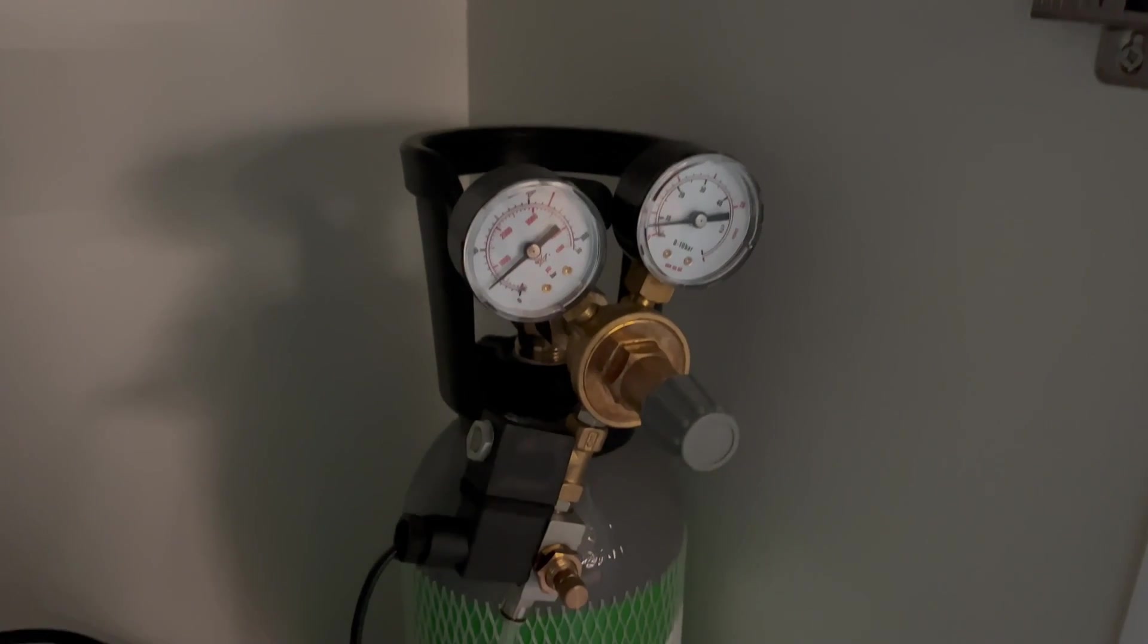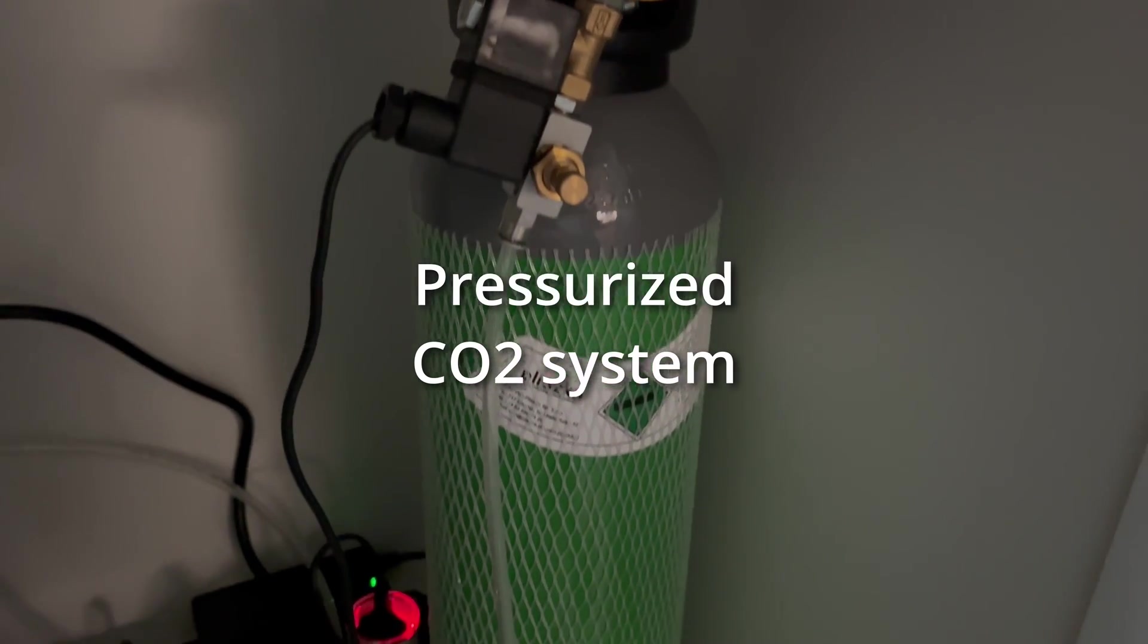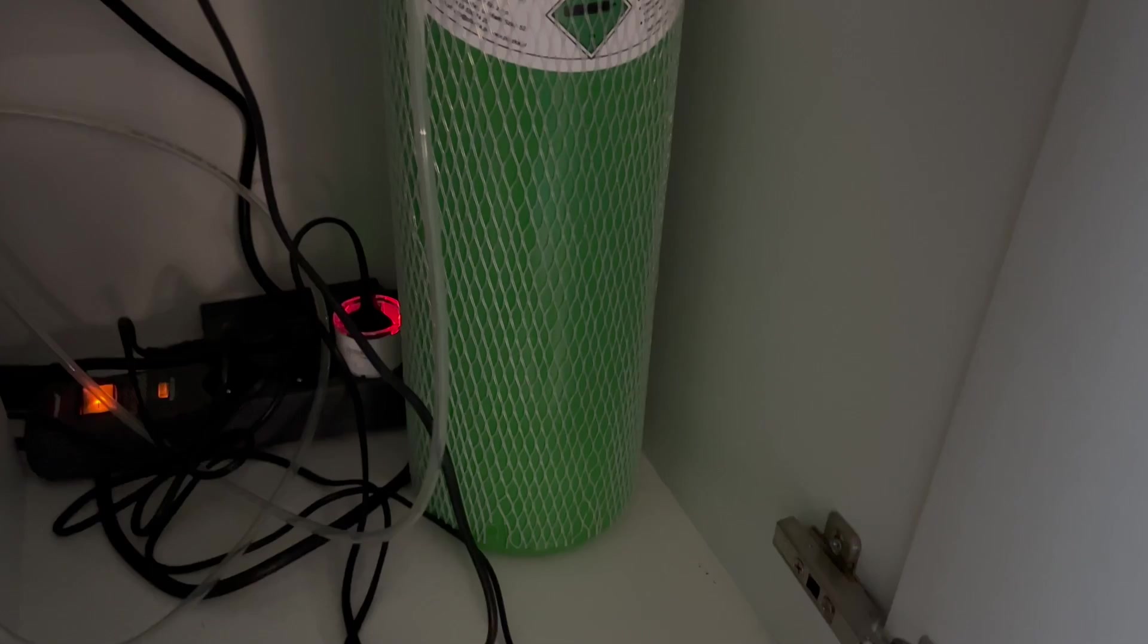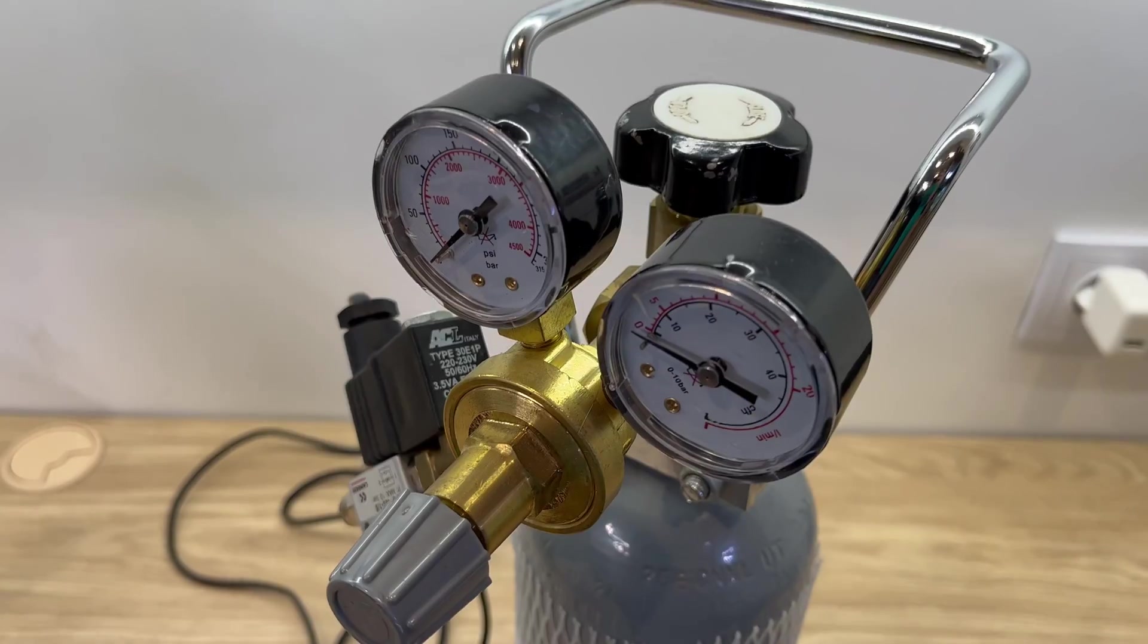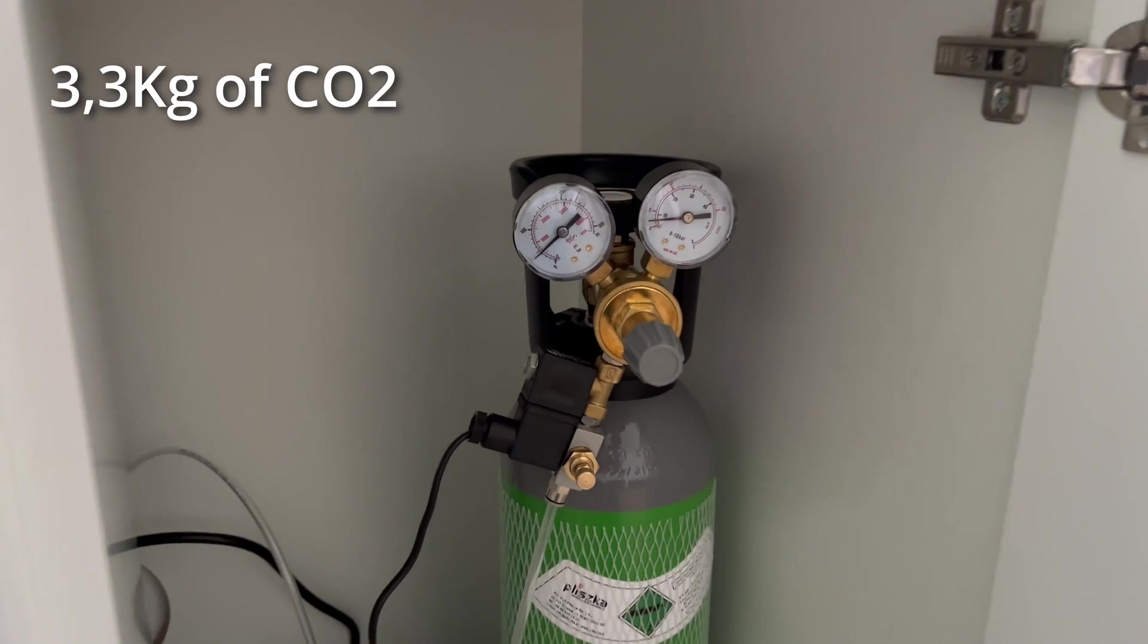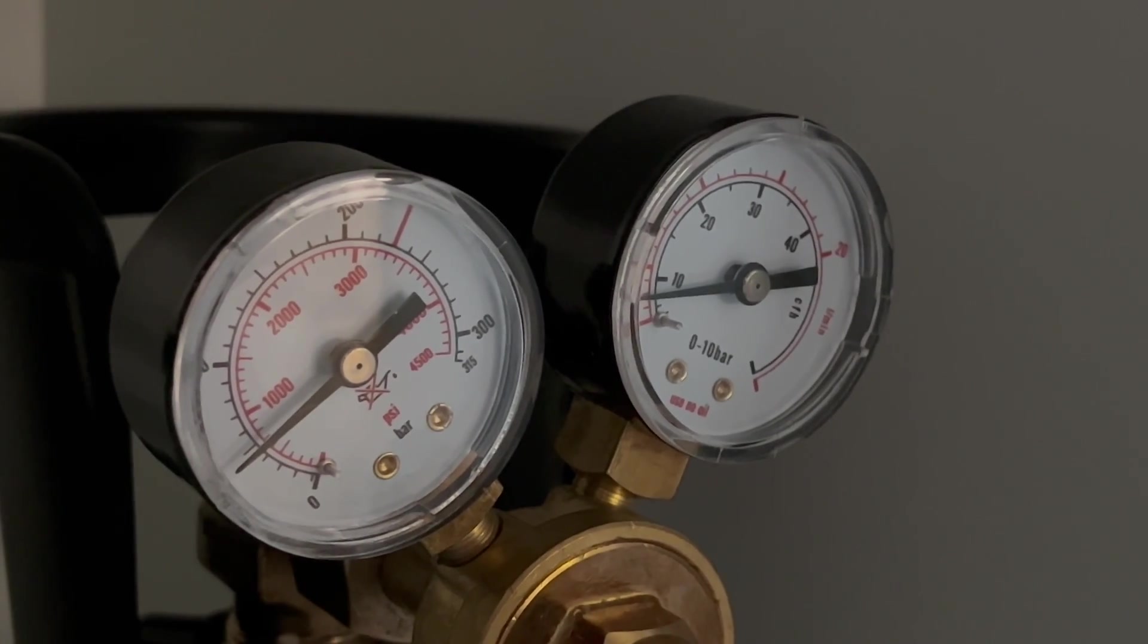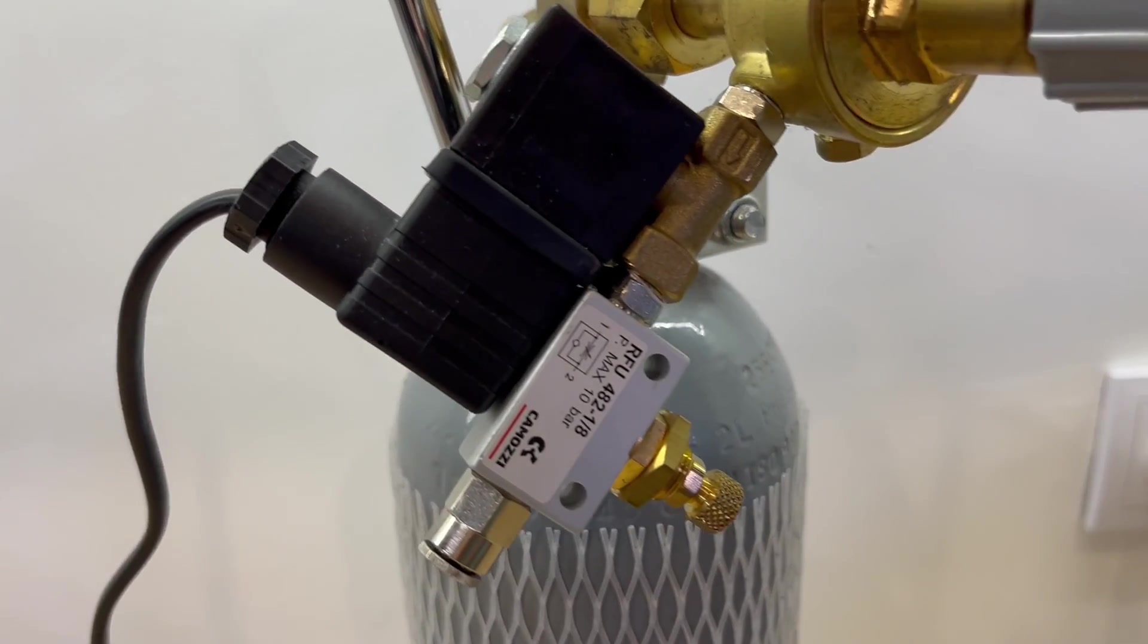And now we are moving to the ultimate option, which is pressurized CO2 system. This is definitely the most expensive option on the list. And again, I have two of them. This one can handle one and a half kilograms of CO2 and the big one is 3.3 kilograms. So yeah, that's a lot of CO2. Of course, both those systems have solenoids attached to them.